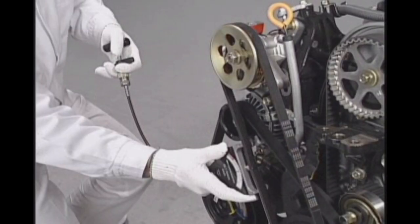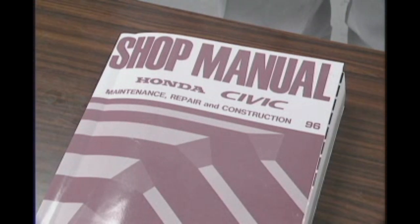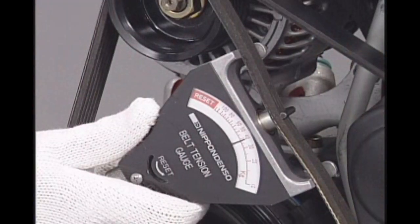It should usually be attached at the midpoint between the two pulleys, but each model has a specified location, so consult the shop manual. Keep the gauge at a right angle to the belt.